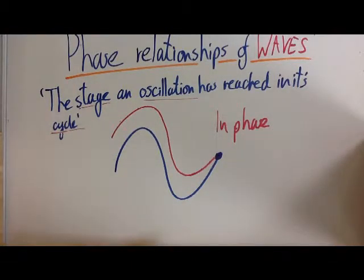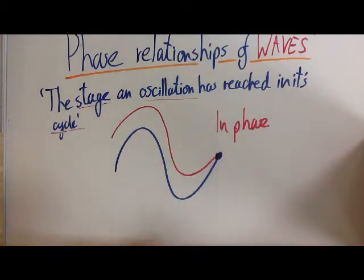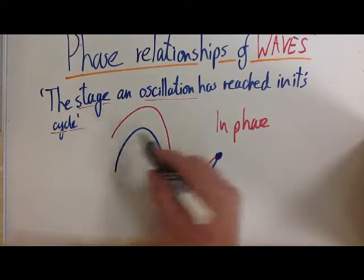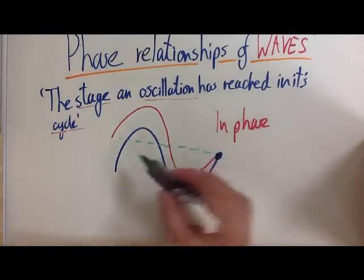Now if two waves were to meet and one was going up and one was going down, the opposite, then we would say they are anti-phase. So I'm going to draw it over the top of this red line. So let's see, there's our wave.